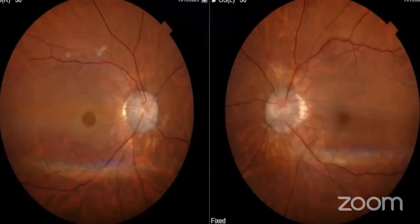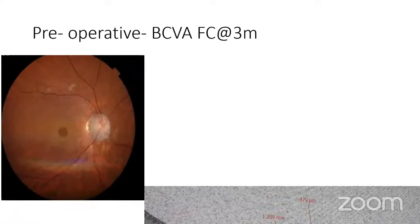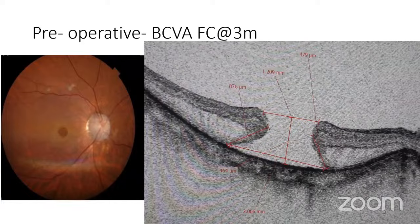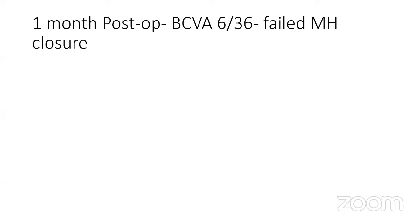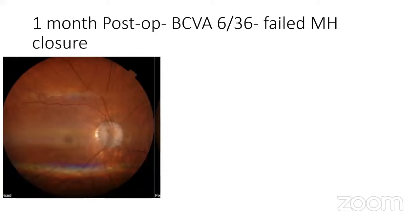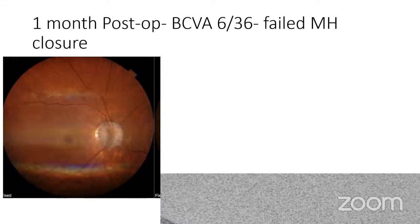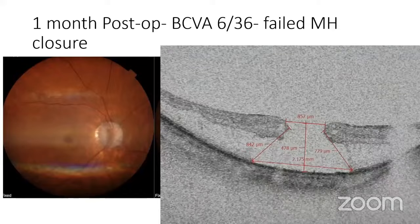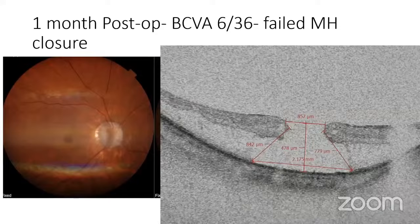This is the pre-op fundus photo as described. It was basically a myopic fundus with a myopic macular hole in the right eye. The pre-operative BCVA was finger counting three meters. This is the OCT — I have marked the various parameters and will be explaining them later in the form of macular hole indices. In post-op one month, the best corrected visual acuity was 6/36, but the hole did not close. So it was a case of failed macular hole closure, and we will discuss why this happened and what management options we have.